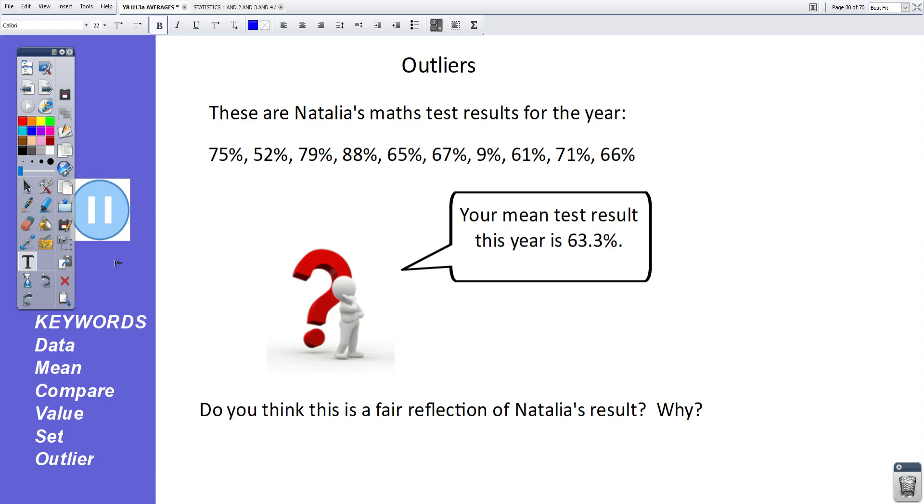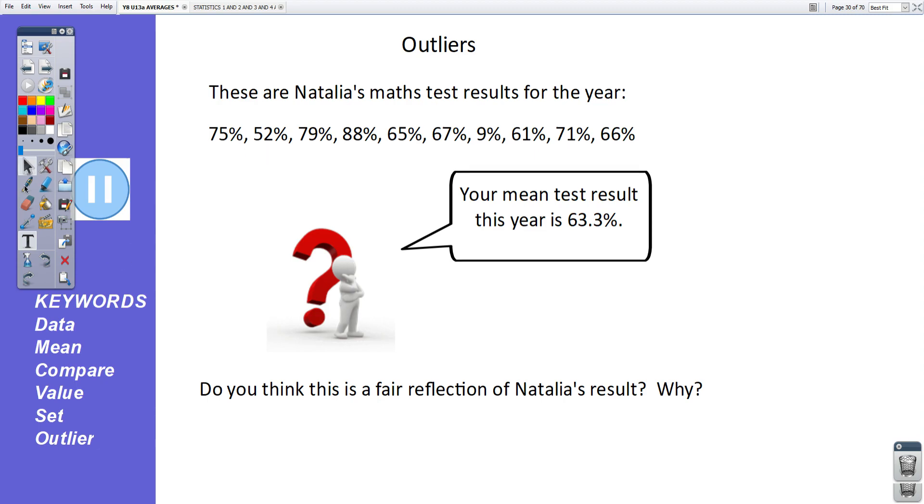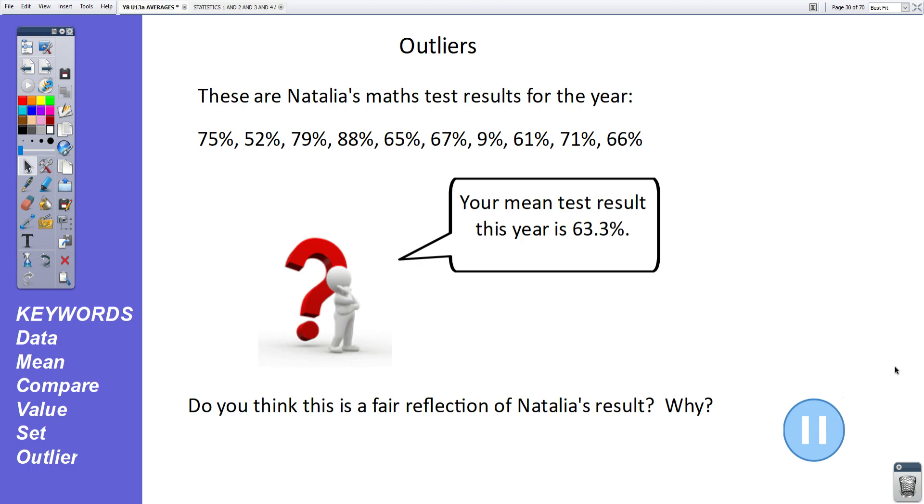Moving on. Outliers. These are Natalia's maths test results for the year. 75, all these are in percentages. 75, 52, 79, 88, 65, 67, 9, 61, 71 and 66. And your mean test result for the year, Natalia, is 63.3%. Do you think this is a fair reflection of Natalia's result? Why? So have a think about that. Pause the video again and unpause it when you are ready to continue. Okay. No, this is not a fair reflection of Natalia's result.